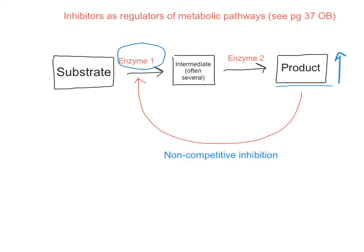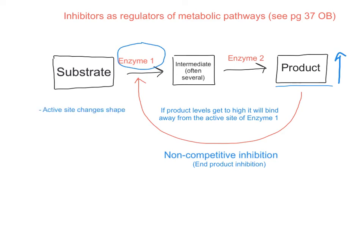This type of inhibition is called end-product inhibition for obvious reasons, and it generally is a non-competitive one. The products of a sequence of events — the end product — bind a site other than the active site, changing the shape of the active site, and therefore that substrate will no longer fit.